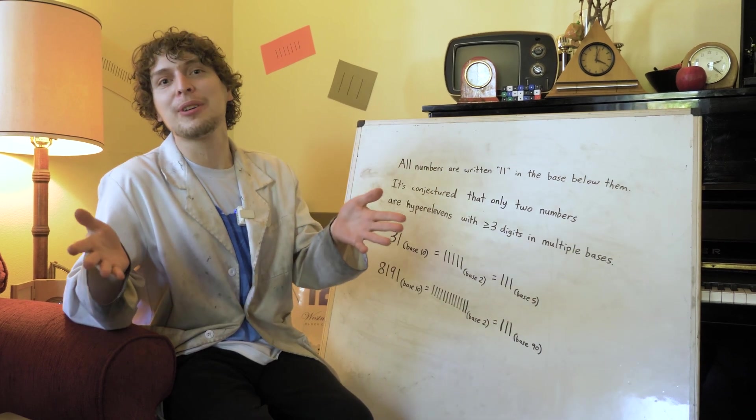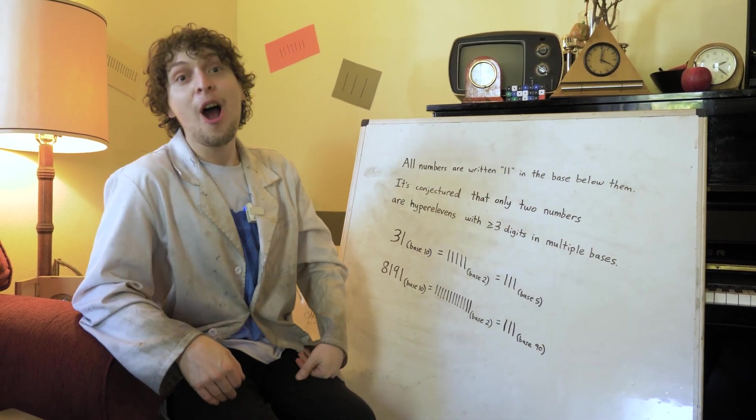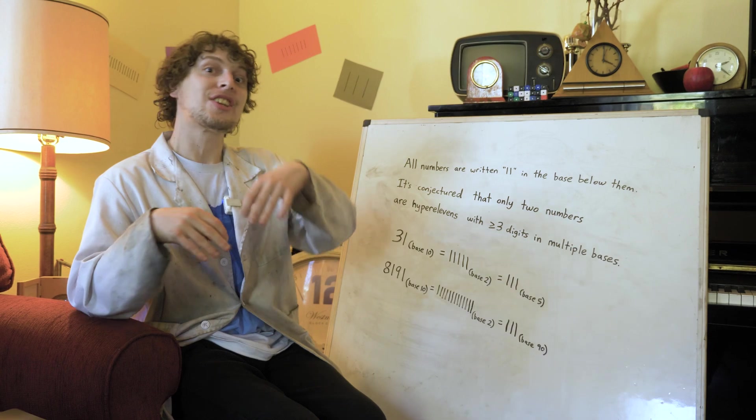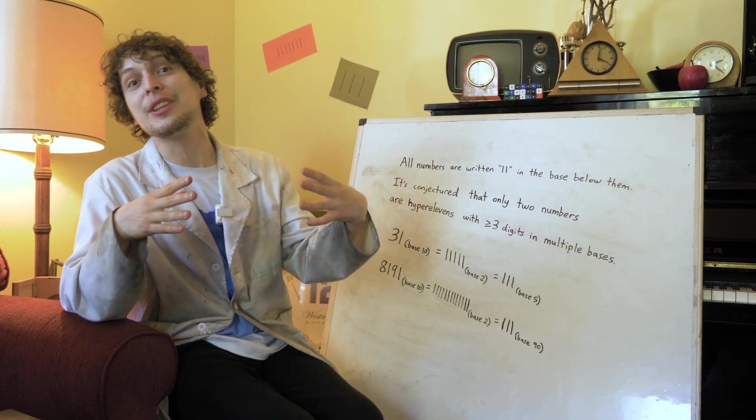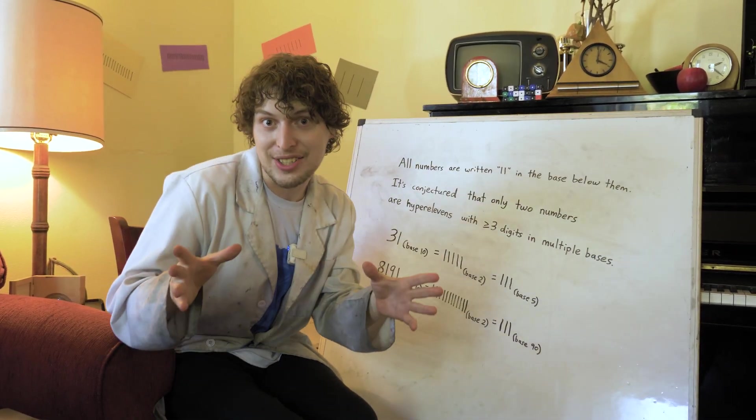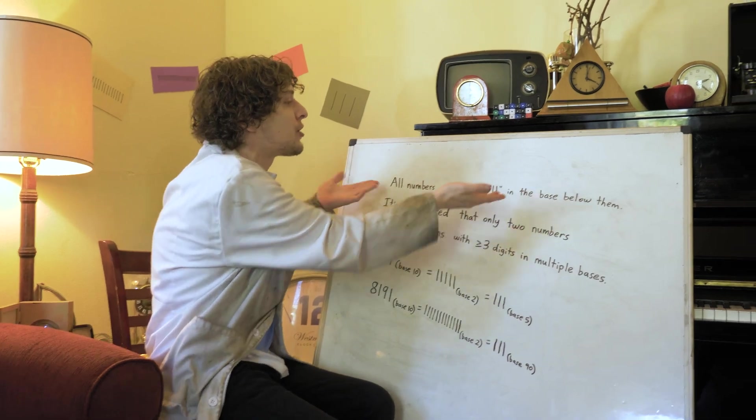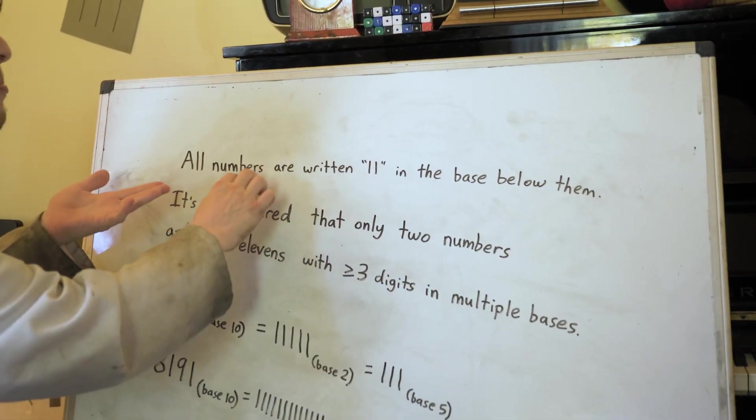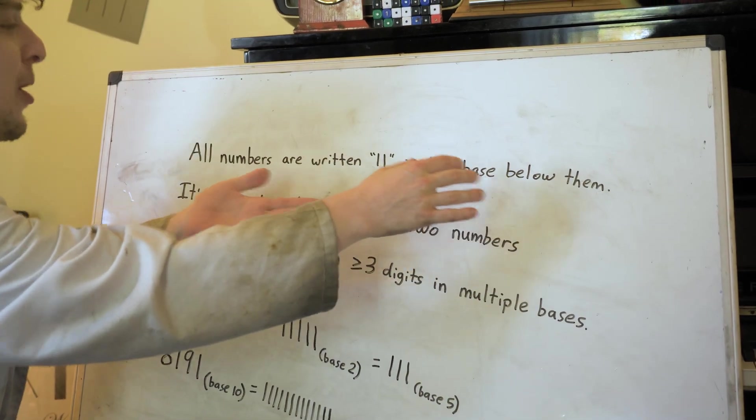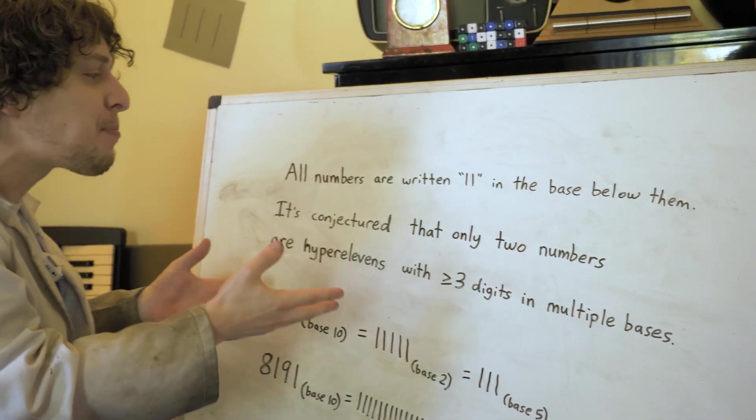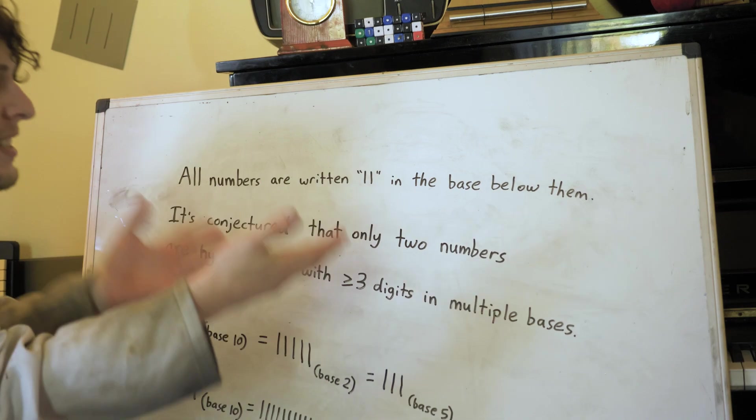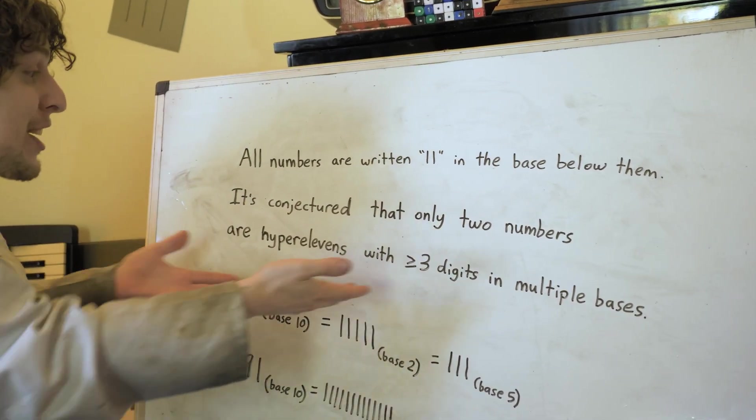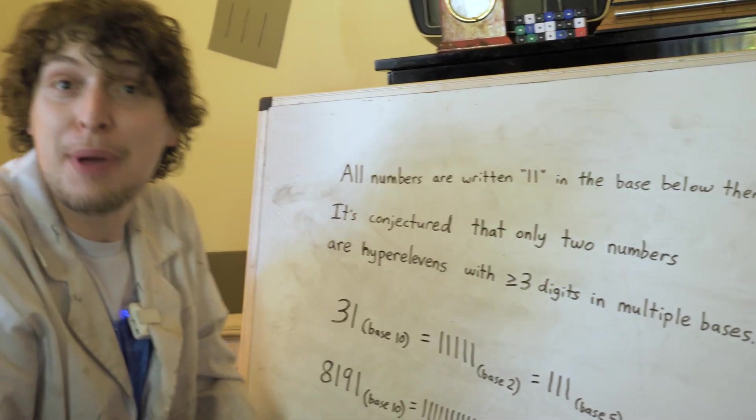With so many numbers being a hyper 11 in some base or another, are there any numbers of things that would be written as a hyper 11 in more than one base? Well, we're going to get trivial doubles where any number can be written as 11 in the base one less than the number. But what if we look for hyper 11s with at least three digits and numbers that can do that in more than one base?